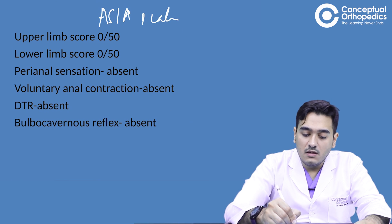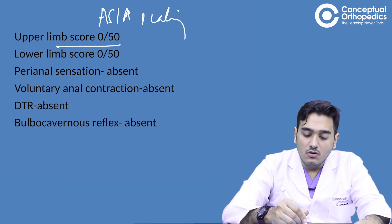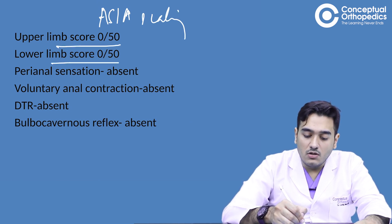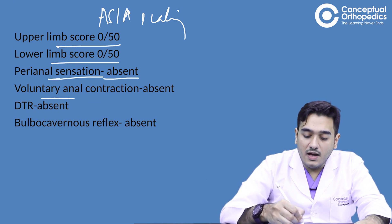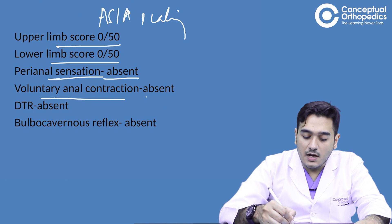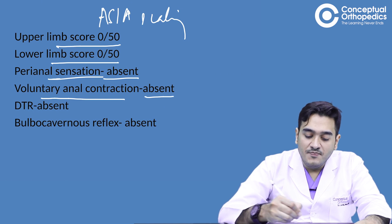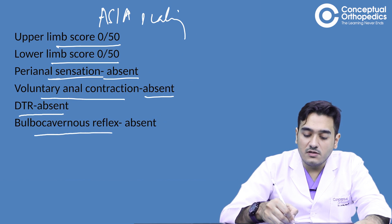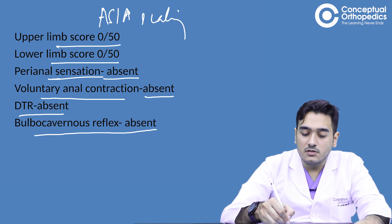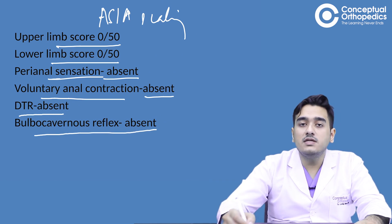On examination as per the ASIA assessment, the upper limb motor score is 0 and the lower limb motor score is 0. Perianal sensation is absent.